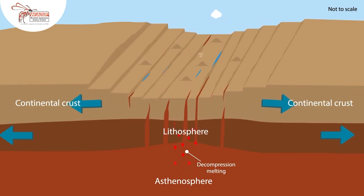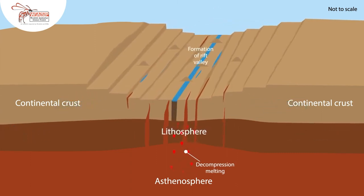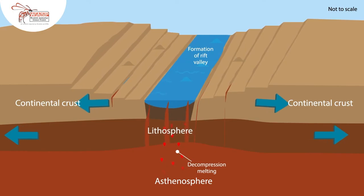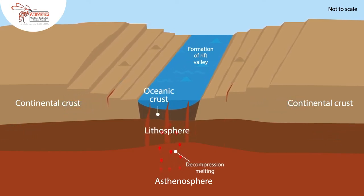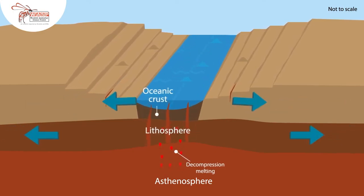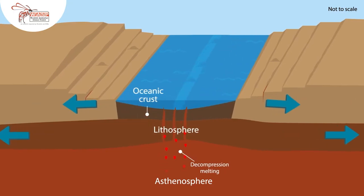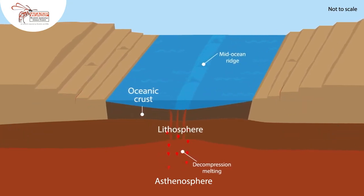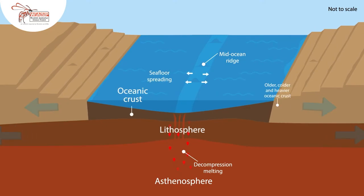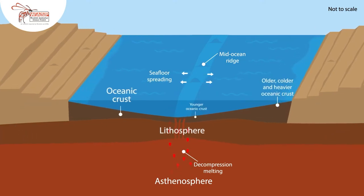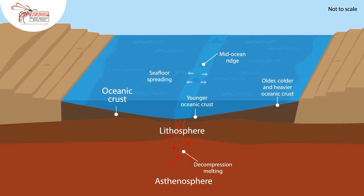When these convection currents move upward, they push two plates apart at the surface, and a gap opens up. This gap is known as a divergent boundary. As the magma rises from the mantle, it cools and hardens, forming new crust. Over millions of years, this process reshapes oceans, continents, and the entire planet.